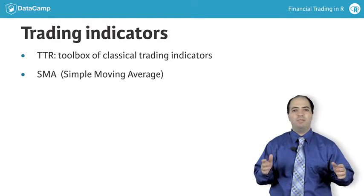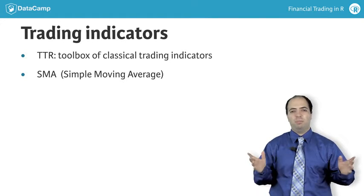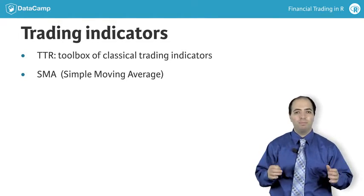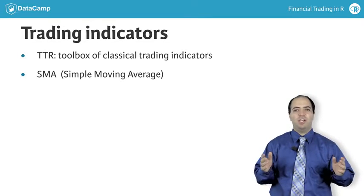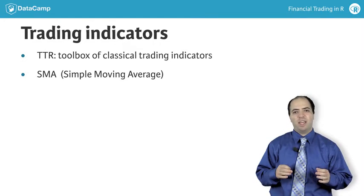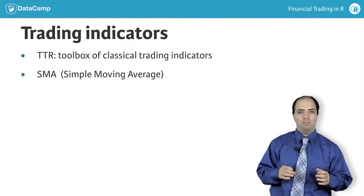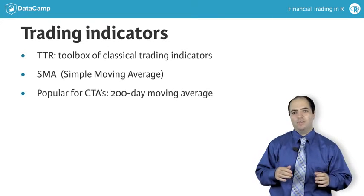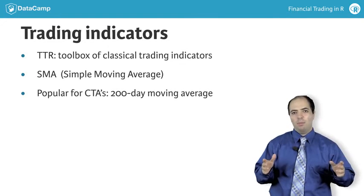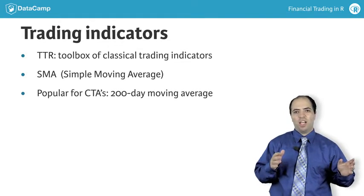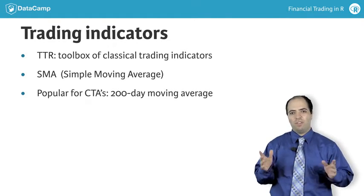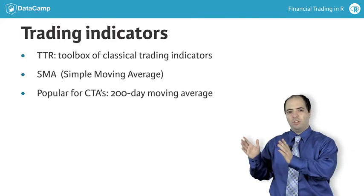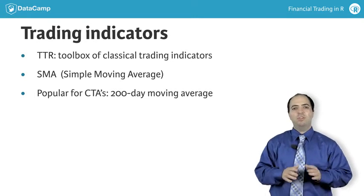In TTR, the SMA function stands for simple moving average. A simple moving average is a calculation that takes a basic average over some past period, such as 200 days, for which there were prices. As time moves forward, the last price falls off of the calculation and the newest one enters, hence the average moves.